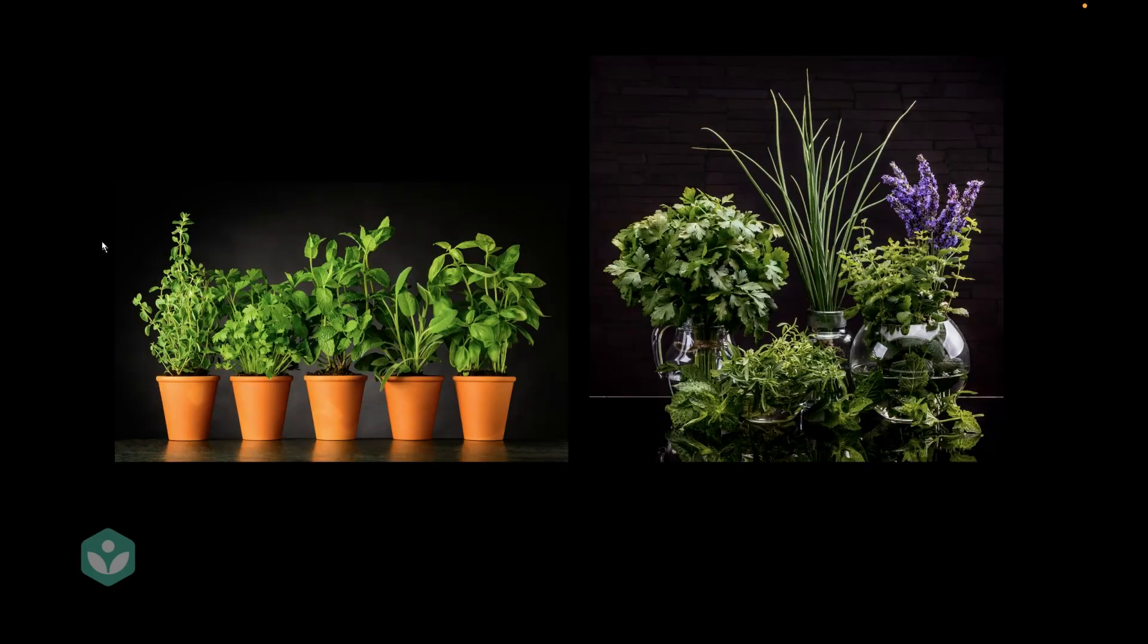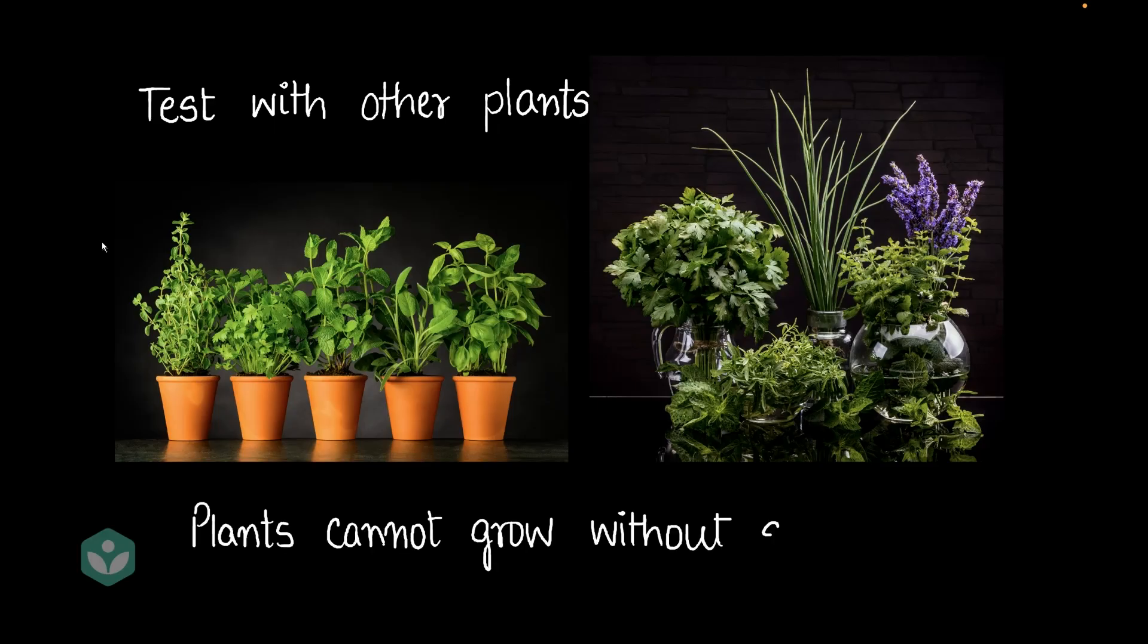So, what did he do? He decided to get a lot more plants from the market and he did the same test with every single plant and then that gave him the same results. And so, when he noticed that every plant placed in the darkness died, he decided to conclude that plants cannot grow without sunlight.